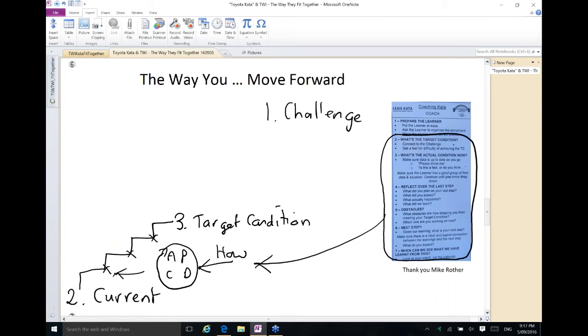Let's go through that. So what's the target condition? This is the questioning behavior, the Kata, the pattern. What's the target condition? What's the actual condition now? We reflect and the key part here is we ask what did we learn? Then we consider our obstacles and we pick one obstacle. Based on what we've learned and that one obstacle, we then determine our next step and we ask the key question, when can we see what we've learned from this? So there's the Kata, that's the pattern of thinking we want to embed in the leader's mind of how to drive PDCA. By adopting that questioning pattern actually makes this wheel spin, drives us forward towards our target condition.